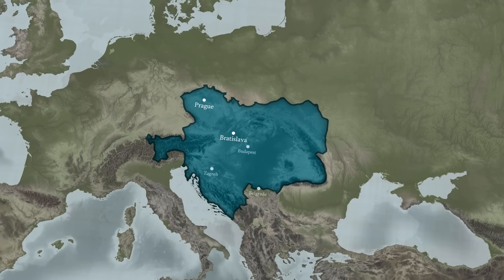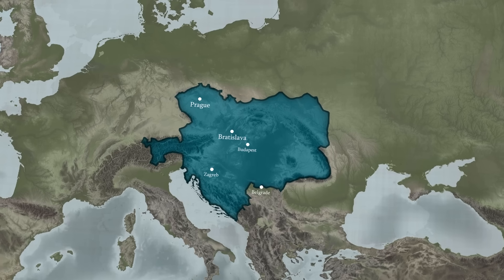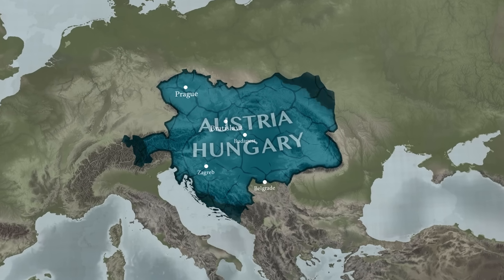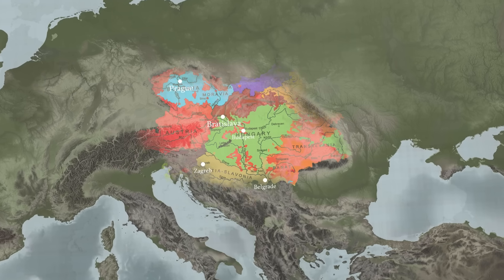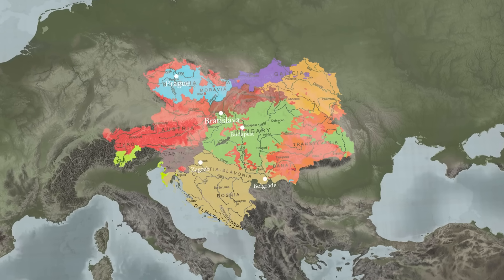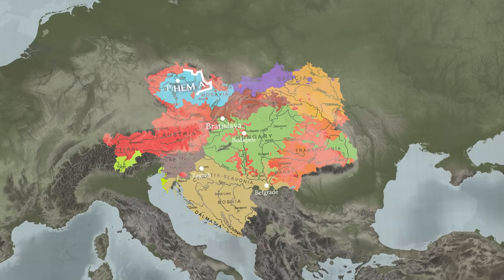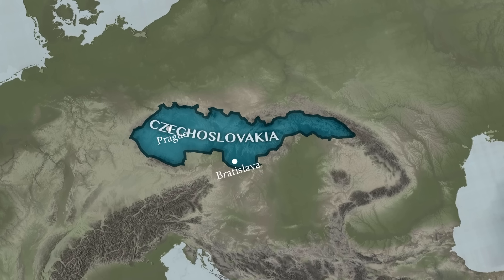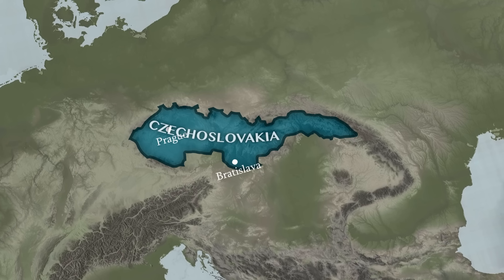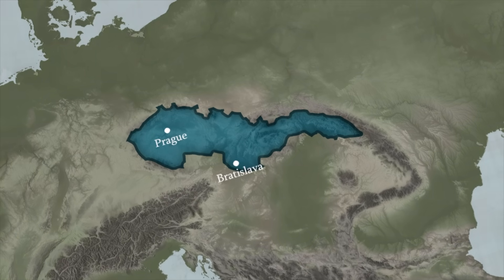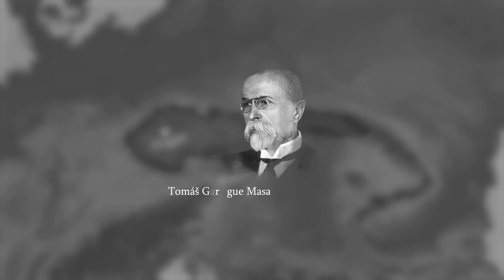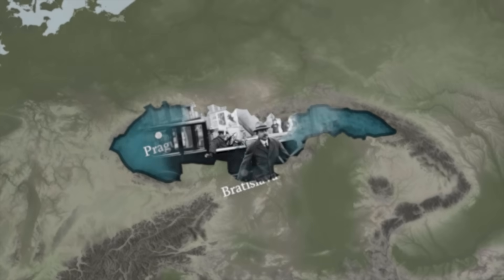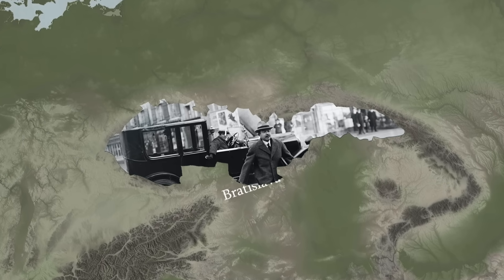Czechoslovakia was birthed in 1918 as the Austro-Hungarian Empire neared its demise and some of its provinces decided to unite in response to their vastly similar cultures, languages, and people. Bohemia, Moravia, and Slovakia formed the new nation and at first seemed to get on quite well. Czechoslovakia was initially a parliamentary democracy under President Masaryk and quickly became one of the more stable and industrially advanced of the Eastern European nations.